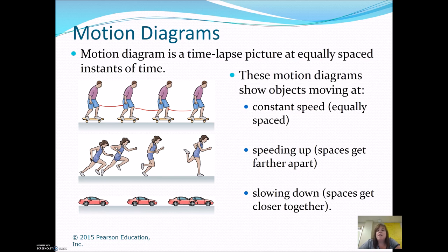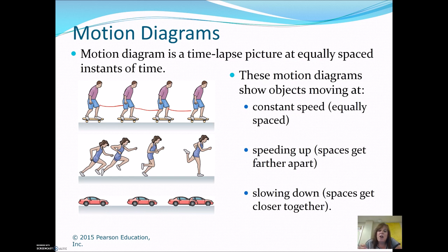If an object is speeding up, as you increase in time, for that same time interval the object has moved farther, so the spaces get farther apart — like in our case of the runner. In a motion diagram, if an object is slowing down, the spaces are going to get closer together, because you're decreasing the amount of distance you cover over that interval of time.